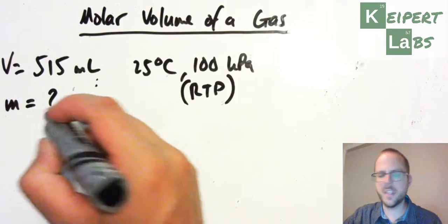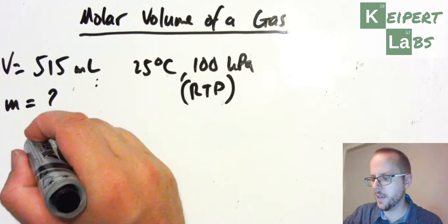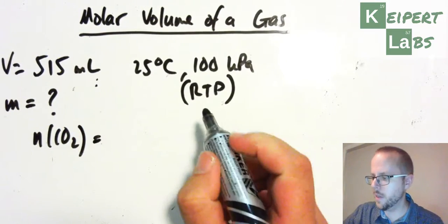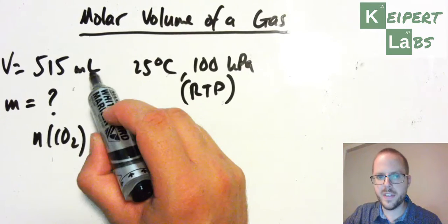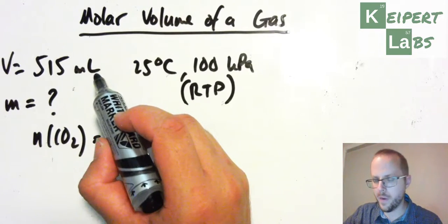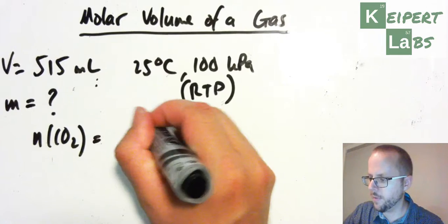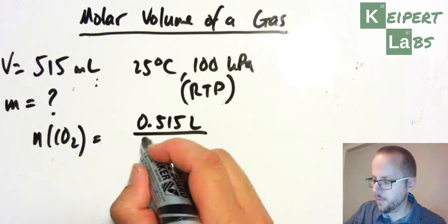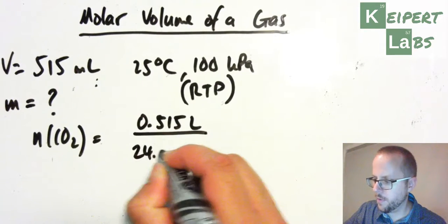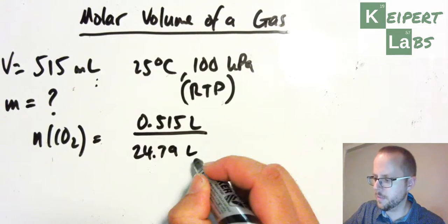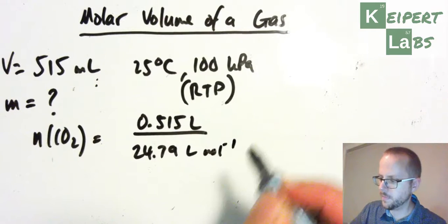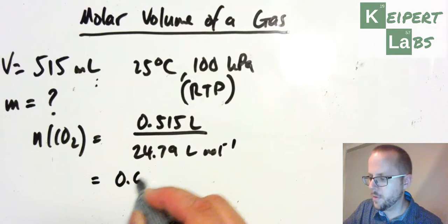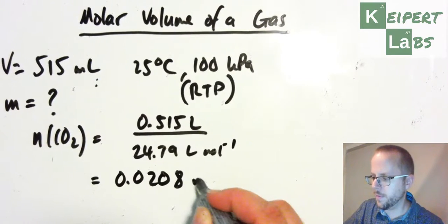So what we need to work out is we need to first work out moles. So the moles of CO2... So we're going to use our molar volume at RTP. So we've got to convert this into litres, and then we can say, all right, if I've got a container that's 0.515 litres, and I've got 24.79 litres per mole, so then I get 0.0208 moles of gas.